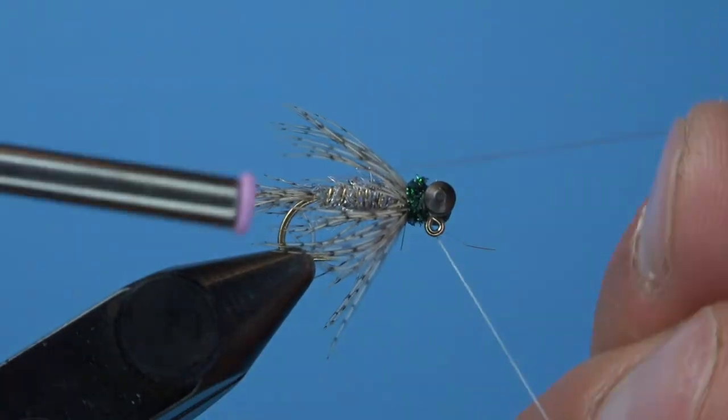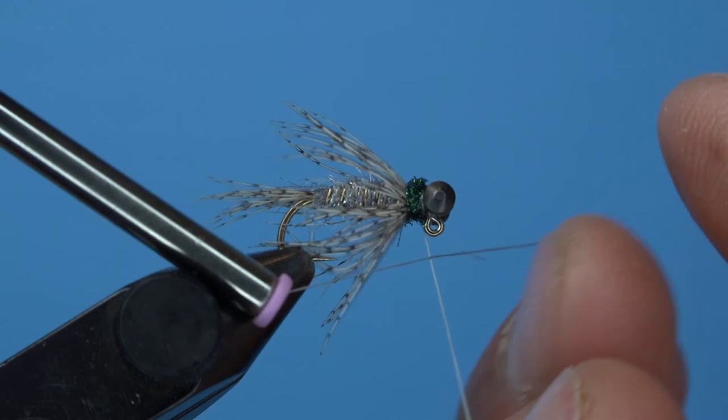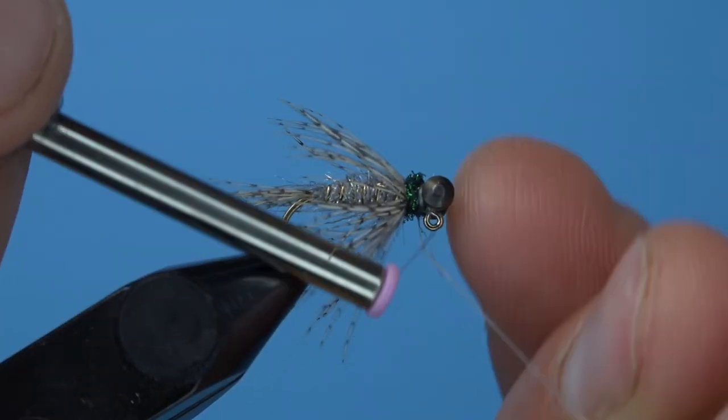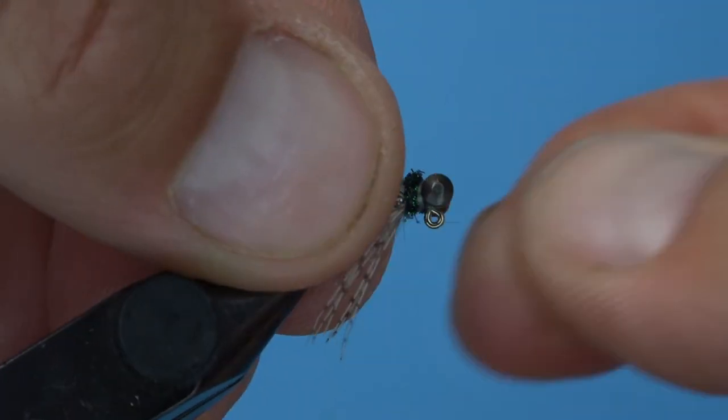Dub a sparse noodle onto your thread and wrap a small ball just behind the barbell eyes. A quick whip finish will leave you with a completed silver fox soft tackle that any angler would be proud of. Great job!